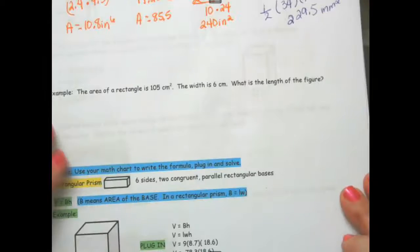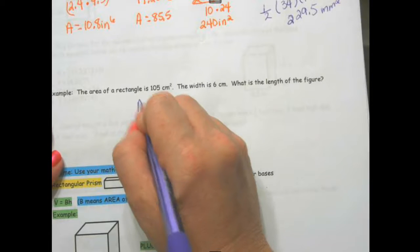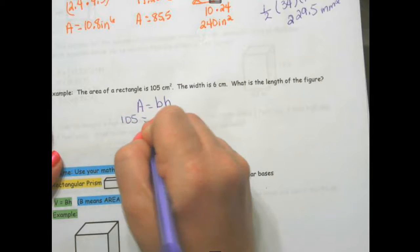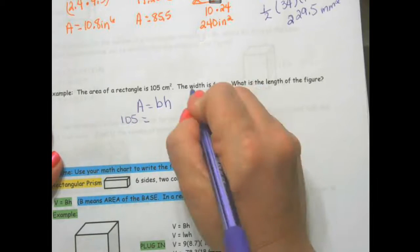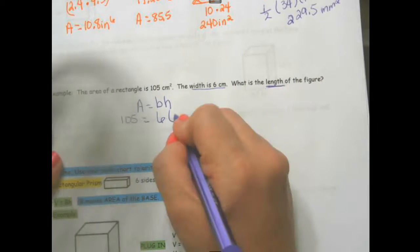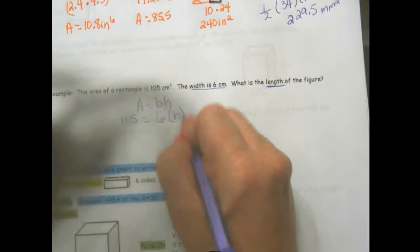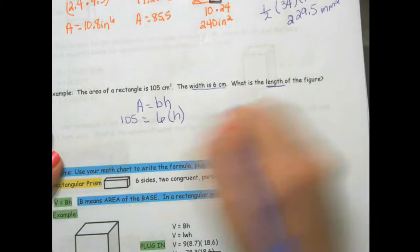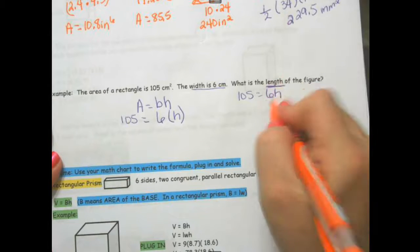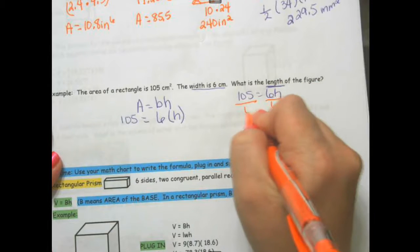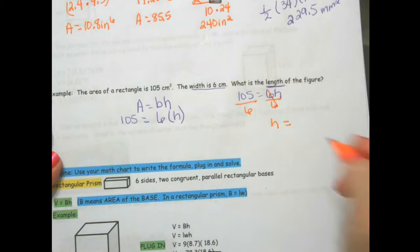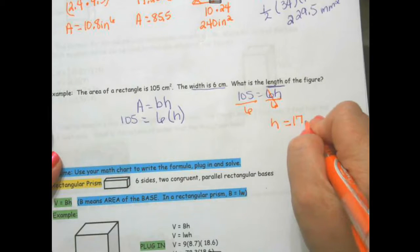The area of the rectangle is 105, so area equals base times height. So 105 equals the width which could be the base, and we want to know the length which could be the height. So 105 equals 6H. I'm going to divide by 6, so H equals 17.5.